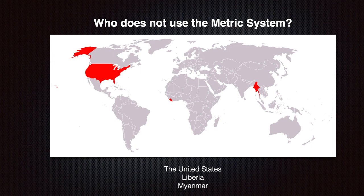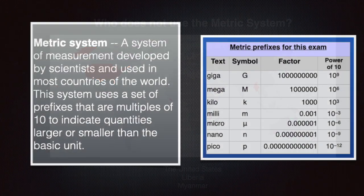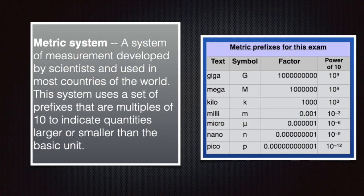Perhaps it is easier to ask who does not use the metric system rather than who does. The entire world uses the metric system except for three countries: the United States, Liberia, and Myanmar, who all use the imperial measurement system. The metric system is a measurement system developed by scientists and used in most countries of the world. It uses a set of prefixes that are multiples of 10 and indicate quantities larger or smaller than the basic unit.